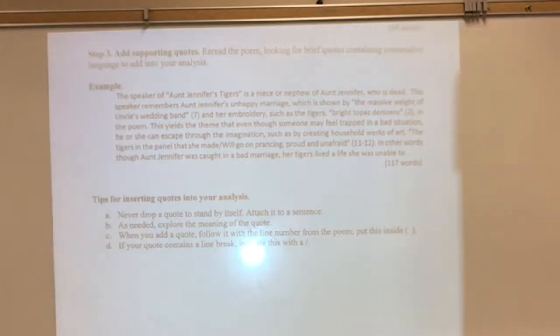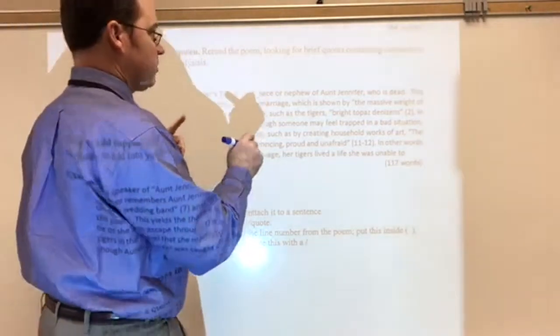Now, from that previous analysis, we're going to add in our evidence. The speaker of Aunt Jennifer's tigers is a niece or nephew of Aunt Jennifer who is dead. The speaker remembers Aunt Jennifer's happy marriage, which is shown by, right?